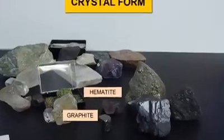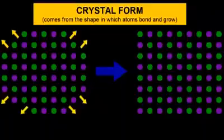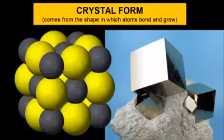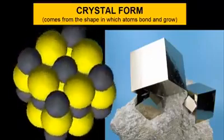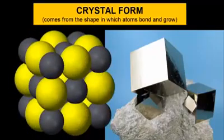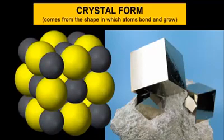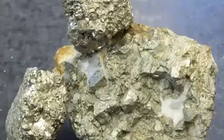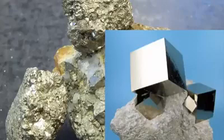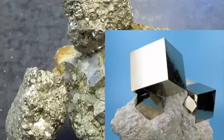Crystal form can help us distinguish among the remaining three minerals. Crystal form is the way a crystal grows, and a mineral's outer crystal form is a reflection of its internal crystalline structure. It is often hard to see crystal form because crystals only form when minerals grow slowly with lots of space around them. It's way more common for minerals to simply fill the space they're given and thus look more massive.